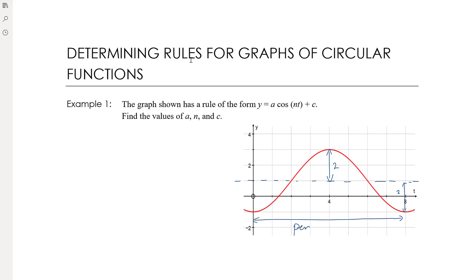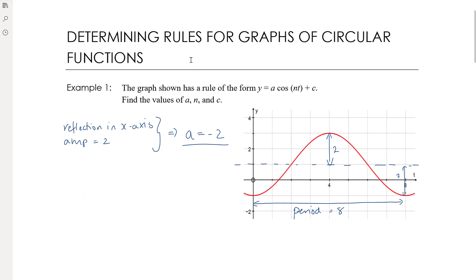It's a cosine function, so I'm looking for where I'm seeing the cosine shape. You might think the cosine starts here, but since this equation has no horizontal translation, that can't be right. Actually, here is the start of the cosine function — the graph hasn't been translated at all; instead it's been reflected in the x-axis, so the a value is negative. We have a reflection in the x-axis and an amplitude of two, which together tell us that a must be negative two.